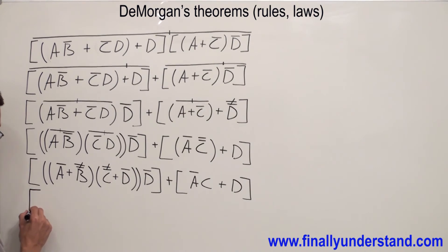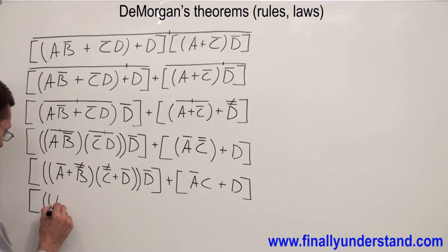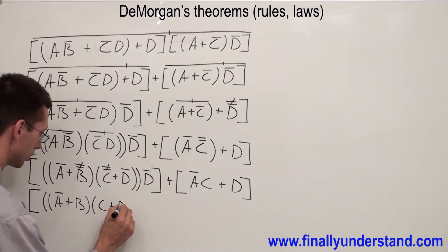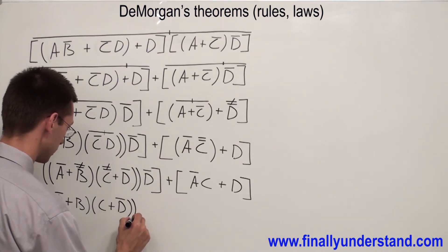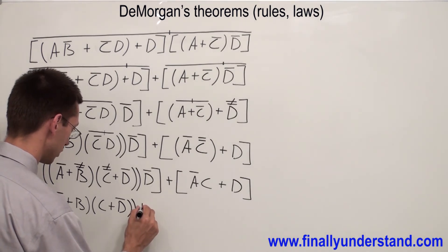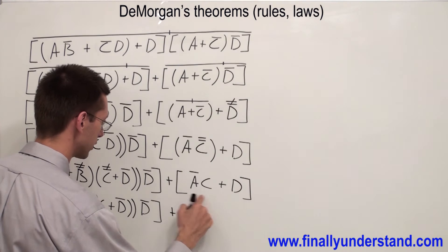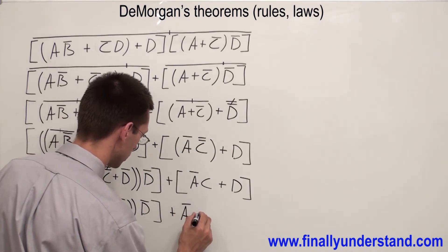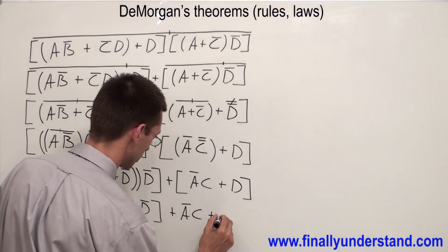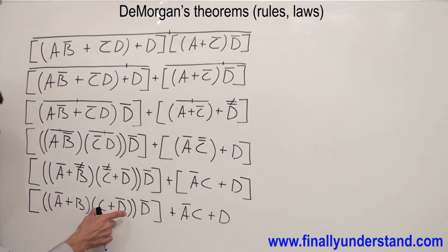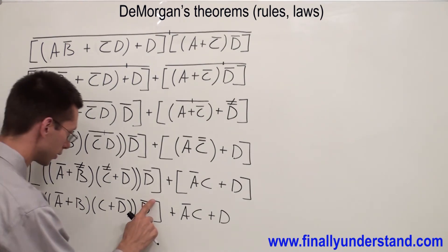That's why I'm going to cancel these two bars and also these two bars. Let me rewrite: I'm going to have (Ā OR B) AND (C OR D̄), close parenthesis, OR Ā AND C, OR D. I can ignore the brackets because I have the product of these three terms, so basically we ignore these brackets as well.